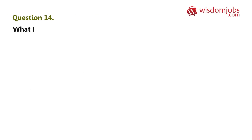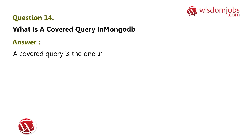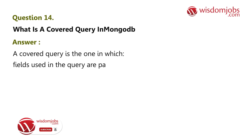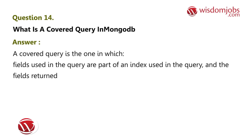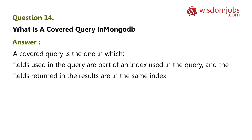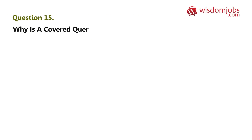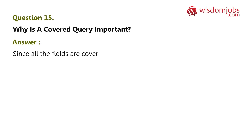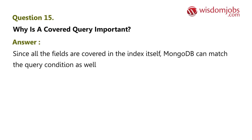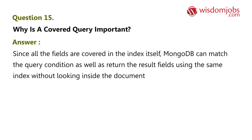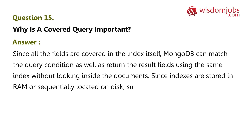Question 14: What is a covered query in MongoDB? Answer: A covered query is one in which the fields used in the query are part of an index used in the query, and the fields returned in the results are in the same index. Question 15: Why is a covered query important? Answer: Since all the fields are covered in the index itself, MongoDB can match the query condition as well as return the result fields using the same index without looking inside the documents. Since indexes are stored in RAM or sequentially located on disk, such access is a lot faster.